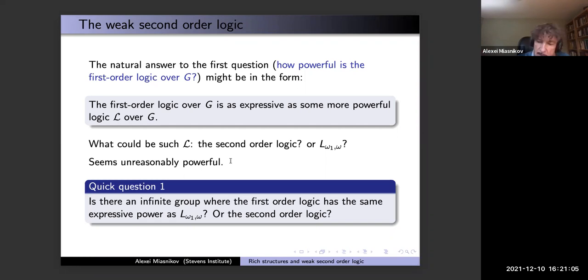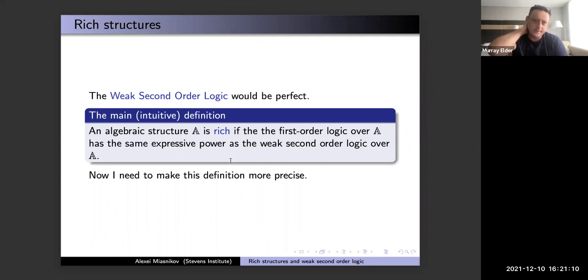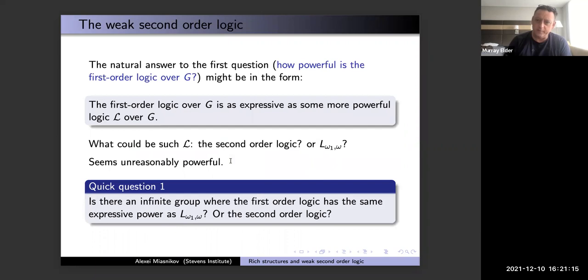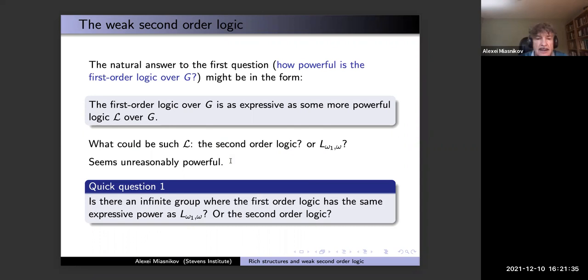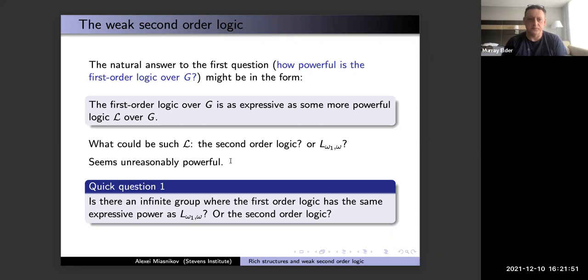Question from the audience: does this uniform definability property not hold for free groups? Yes, free groups do not have it. Could you do uniform definability if you're allowed second-order logic? Absolutely, no problem at all. But the point is I want to use just the usual first-order logic — nothing else — but want it to be this powerful in this particular group. That's the essence.